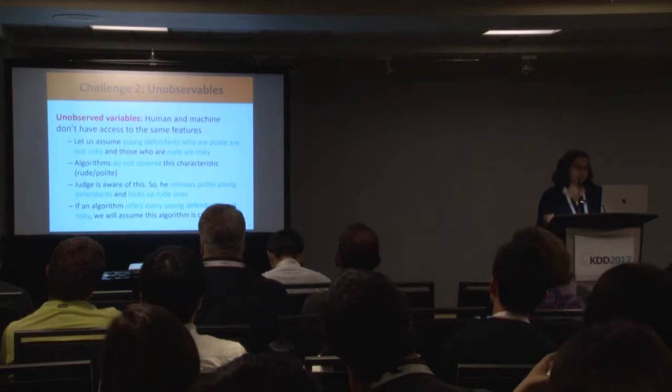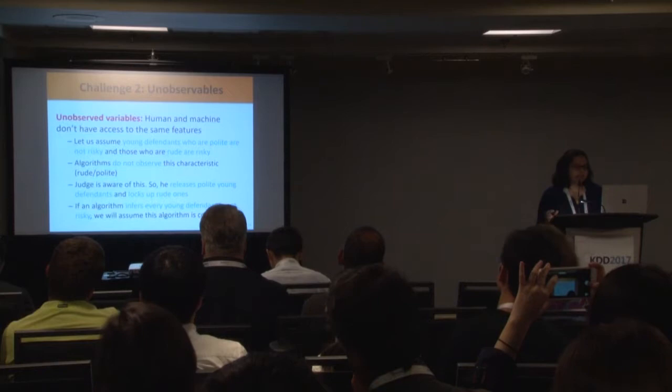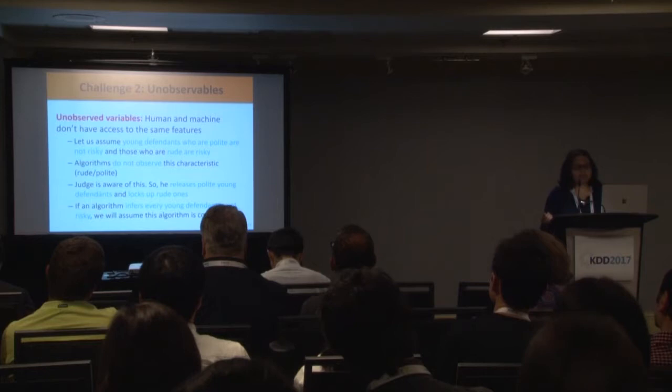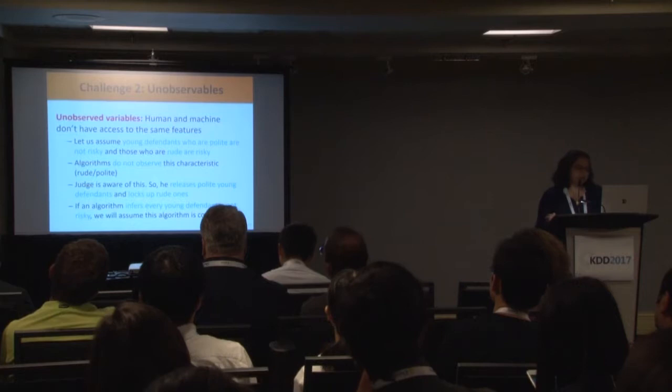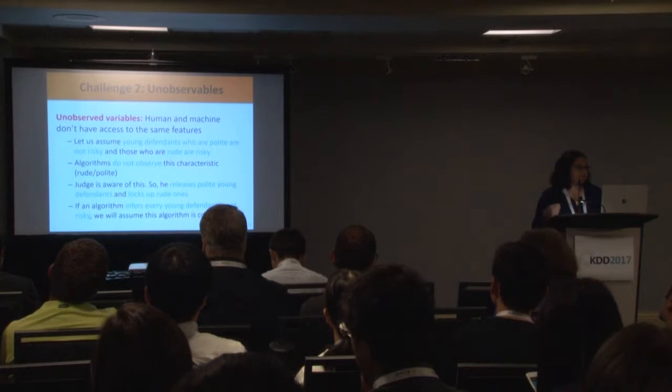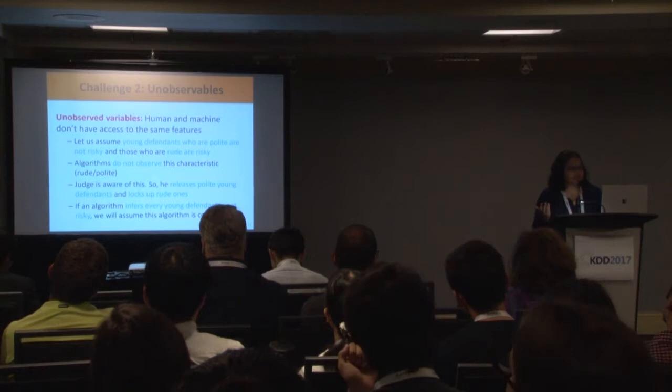This relates to the information asymmetry where humans and machines don't have the same feature sets. Assume there is a rule in the real world that young defendants who are polite in court are not risky, while young defendants who are rude are risky. Algorithms do not observe this characteristic — it is subtle and hard to quantify — but judges, out of prior experience, may be aware of it.